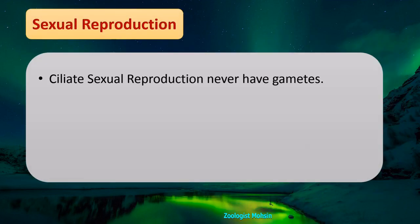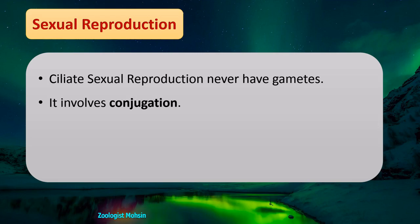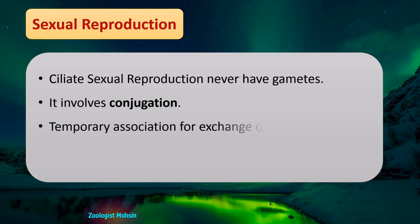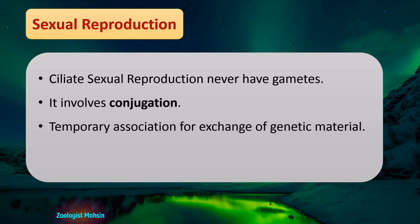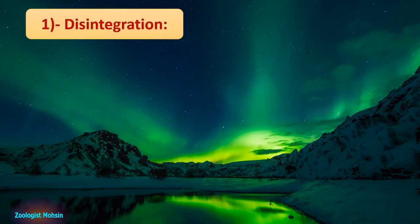Ciliate sexual reproduction never involves gametes — don't confuse it with sexual reproduction in higher animals or mammals. It involves conjugation: a temporary association for the exchange of genetic material. The following steps are involved in the sexual reproduction of paramecium, or ciliates in general.